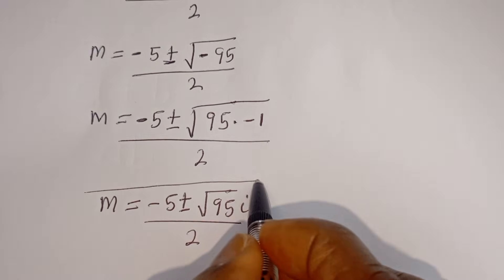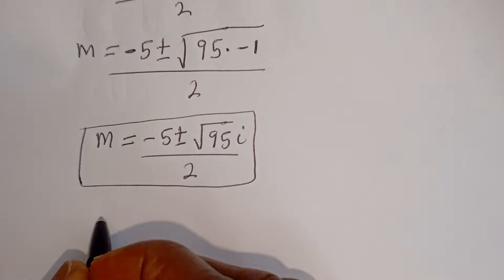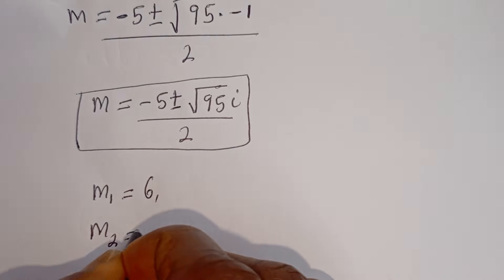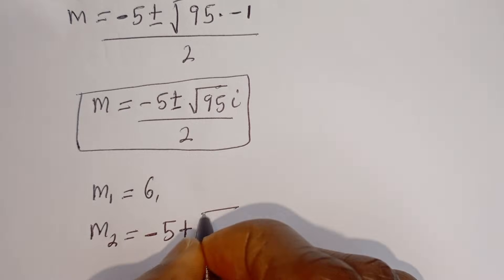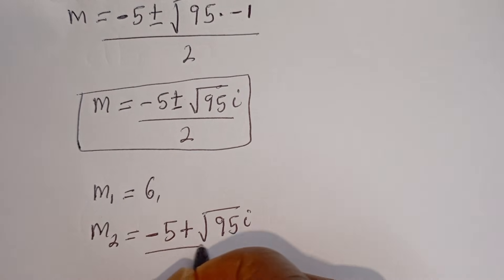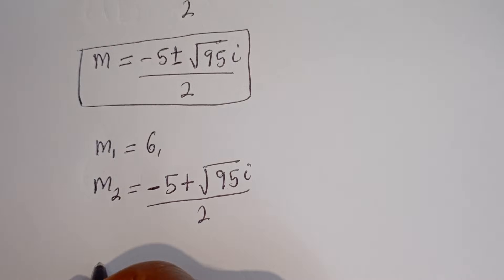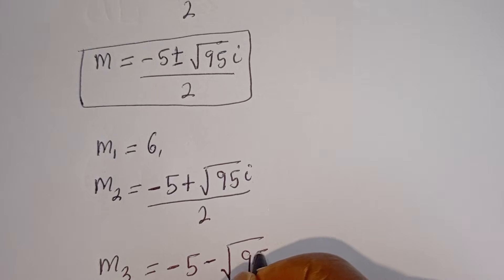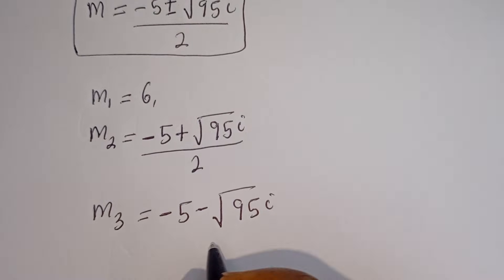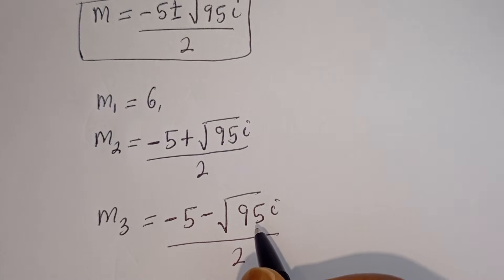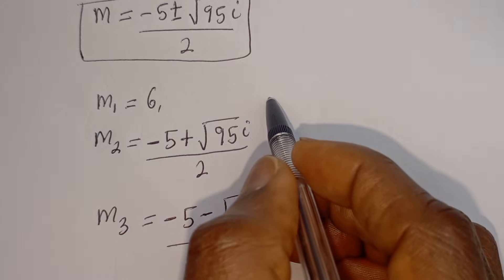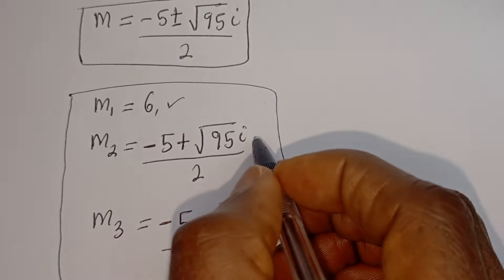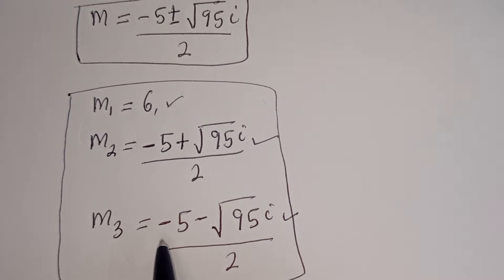These are the other values of M. Therefore our final answers are: M₁ equals 6, M₂ equals (negative 5 plus square root of 95·i) over 2, and M₃ equals (negative 5 minus square root of 95·i) over 2. This is the final answer, and we can see that we have one real root and two imaginary roots.